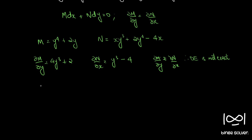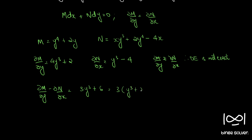We first take the difference and see. 4y cubed minus y cubed is 3y cubed; 2 minus minus 4 is 6. So we can write this as 3 into y cubed plus 2. If we take y outside, we have y cubed plus 2 here in M.